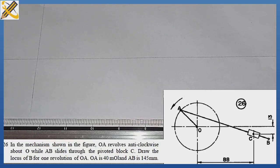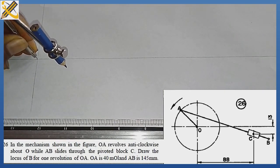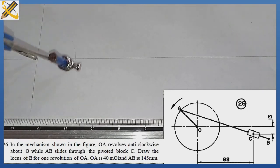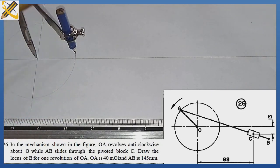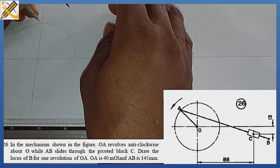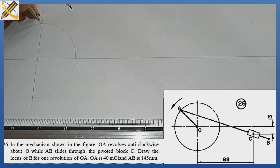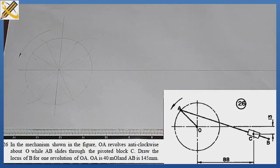The first thing we are going to do is develop the same question we see on the screen. We are told that length OA is 40 mm, so with your compass measure 40 mm, place it at the center, and produce a circle. After doing that, divide the circle into 12 equal halves.